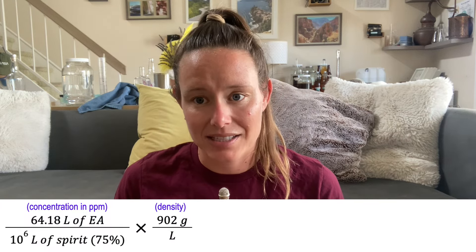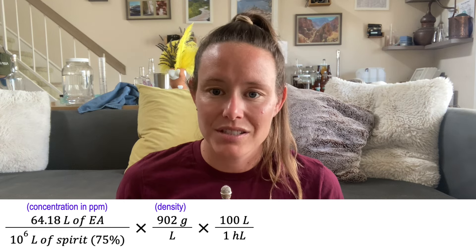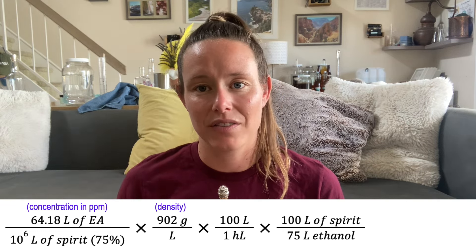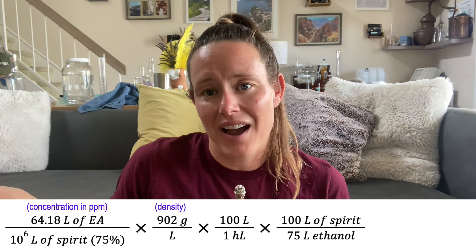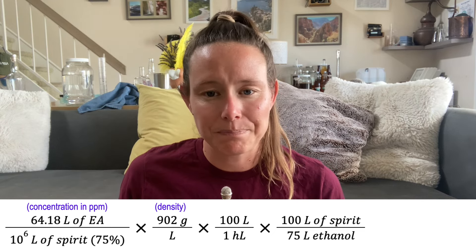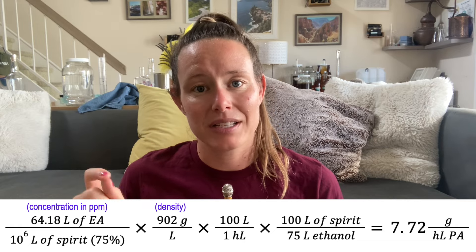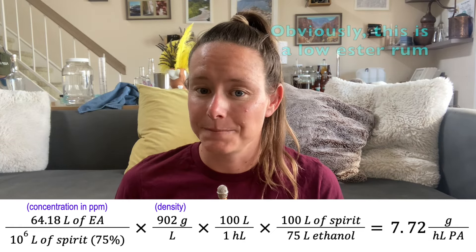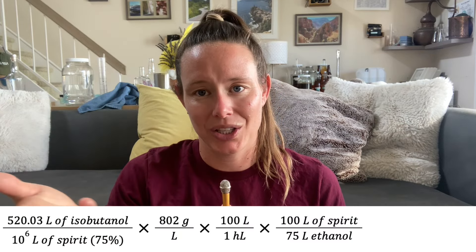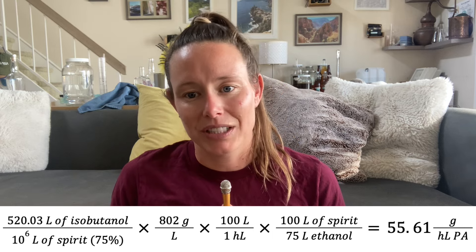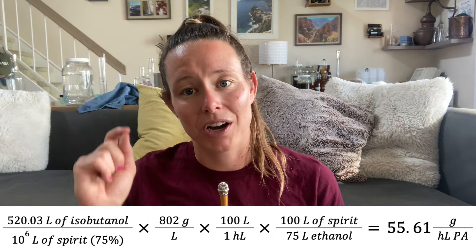We're going with ethyl acetate and isobutanol. The concentration of ethyl acetate is 64.18 ppm and isobutanol is 520.03 ppm. The density of ethyl acetate is 902 g/L while the density of isobutanol is 802 g/L. To go from ppm of ethyl acetate to g/hlpa, I multiply the ppm by the density of ethyl acetate, convert liters to hectolitres (100 liters per hectolitre), then convert to units of pure alcohol knowing there are 75 liters of ethanol per 100 liters of spirit. That means 64.18 ppm of ethyl acetate equals 7.72 g/hlpa. For isobutanol, the same process gives 520.03 ppm equals 55.61 g/hlpa.